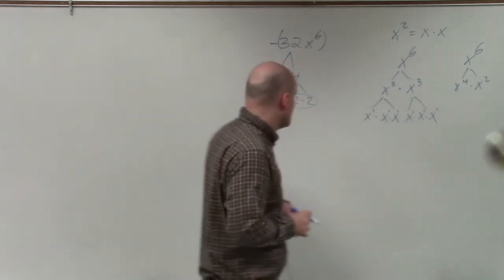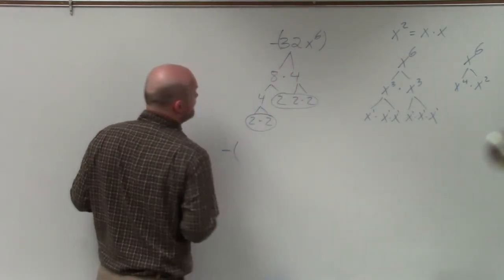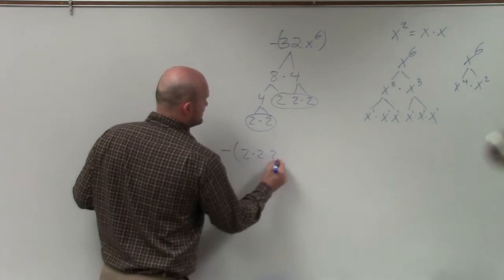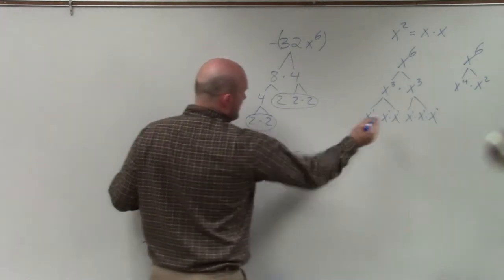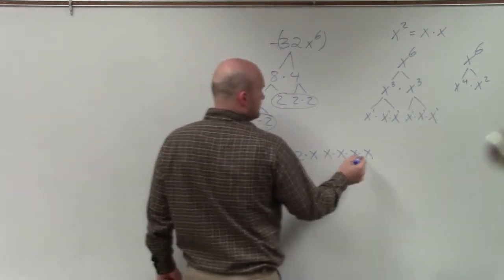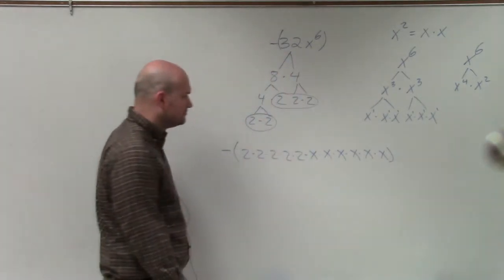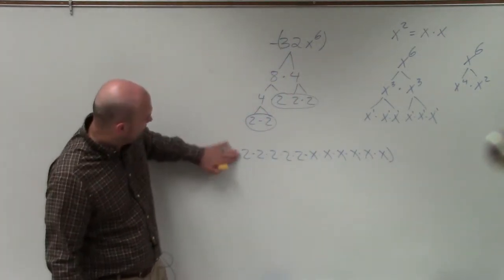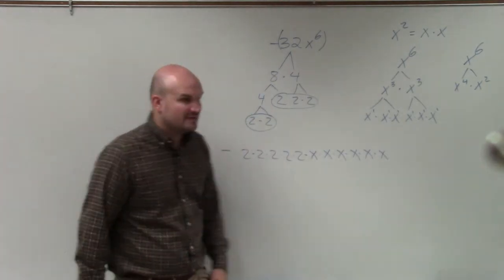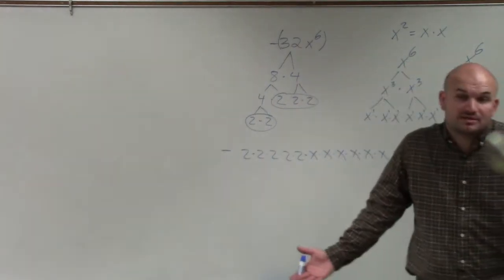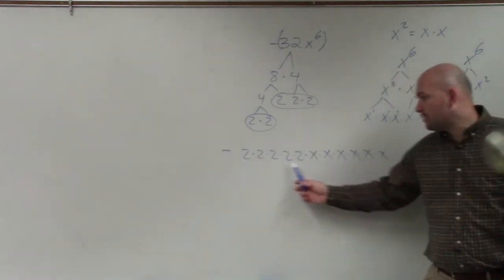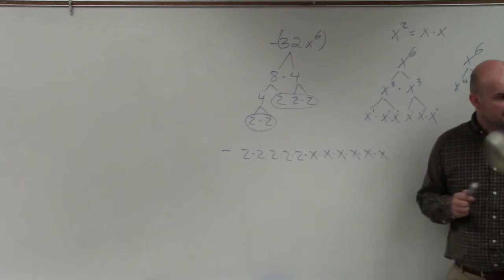Now let's write down our prime factorization. I have the negative outside the parentheses, and then 2 times 2 times 2 times 2 times 2, and then times x times x times x times x times x times x. In reality, we don't really need the parentheses because we're not distributing, so you can just leave the negative out in front. That would be your prime factorization — these are all prime numbers and these are all linear factors.